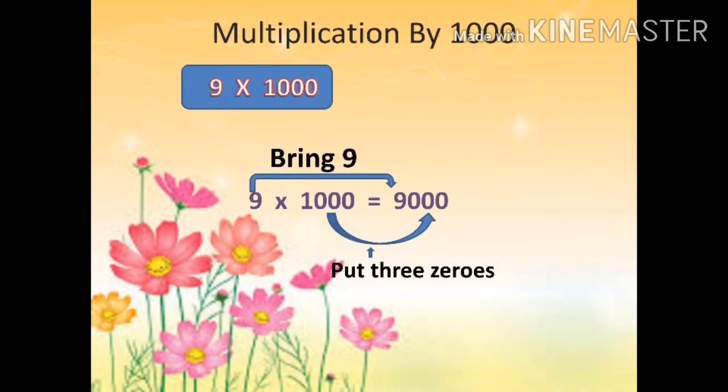Now let's move to the next topic: multiplication by 1000. 9 multiplied by 1000 equals 9000. We will keep 9 as it is and we will put three zeros. Why three zeros? Because in 1000 we are having three zeros.